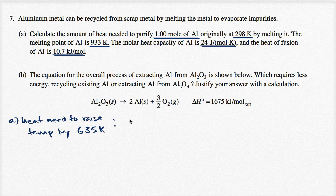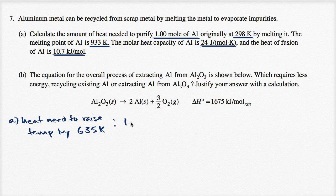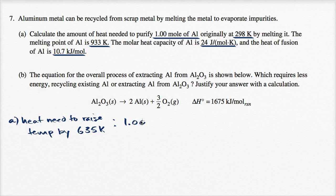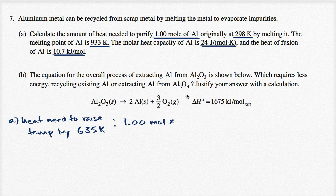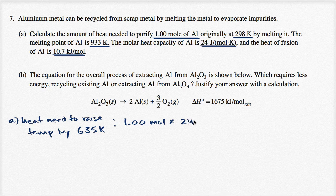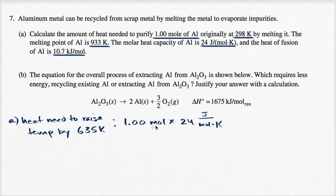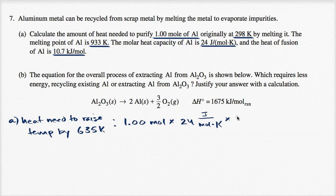The heat needed to raise temperature by 635 Kelvin: we have 1.00 mole of aluminum times the molar heat capacity, 24 joules per mole Kelvin. This would be the amount of heat to raise it by one Kelvin. But now let's multiply by 635 Kelvin.